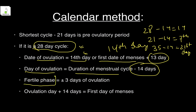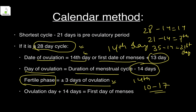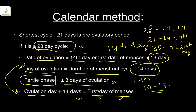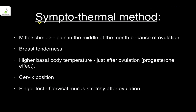Additional calendar formulas: ovulation day plus 14 days equals the first day of menses — for example, if ovulation is on day 21 then menses starts on day 35. Also, shortest cycle minus 21 days gives the pre-ovulatory infertile period — for example, if the shortest cycle is 30 days, the pre-ovulatory period is 9 days. These formulas help calculate safe and unsafe periods.